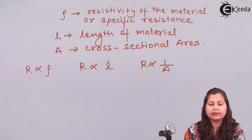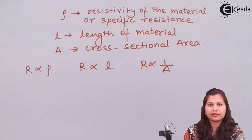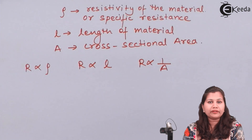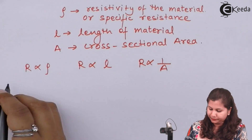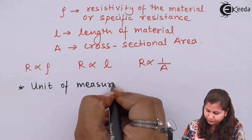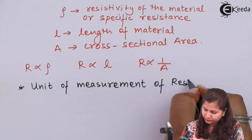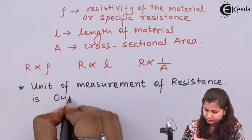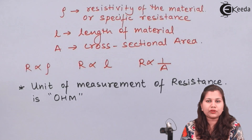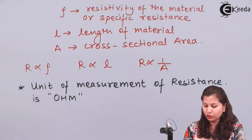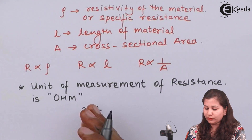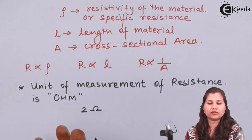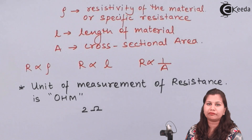Now, these are the formulas through which we can calculate resistance. The unit of measurement of resistance is ohms. So if you want to measure resistance, it is measured in ohms. For example, if a material has a resistance value of 2, we express it as 2 ohms (Ω). This value can be in ohms, kilo-ohms, or mega-ohms. In this way we can have different values of resistance for different materials.